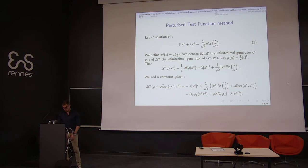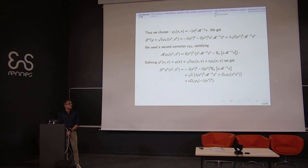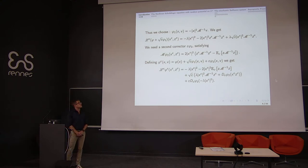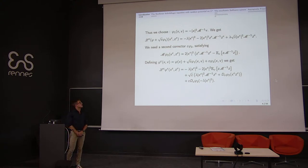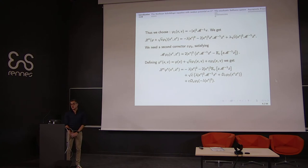We obtain an expression where a priori there are no more singularities in epsilon. However, the rescaled process z-epsilon behaves as a negative power of epsilon, so the second term on the right-hand side needs to be compensated. We therefore introduce a second corrector phi-2.